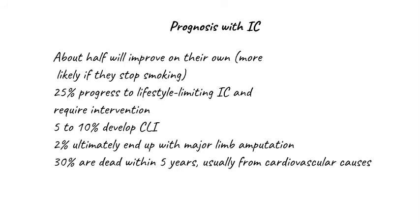Patients and their families will ask about the prognosis with intermittent claudication. Many initially assume it inevitably means progression to limb-threatening ischemia or limb loss, but actually many patients avoid these extreme outcomes. About 50 percent of patients will report that their symptoms improve on their own, and this is much more likely if they stop smoking. About 25 percent will progress to lifestyle-limiting claudication requiring intervention. Between 1 in 10 and 1 in 20 claudicants will go on to develop chronic limb-threatening ischemia, and overall about 1 in 50 ultimately end up with a major limb amputation. They are actually much more likely to come to harm from cardiac or cerebrovascular disease, with 1 in 3 of these patients dying — usually from a cardiovascular cause — within five years of diagnosis.